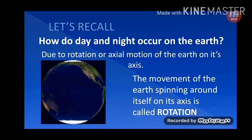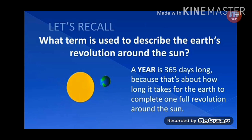Let's recall what you learned in the previous standard. How do day and night occur on the earth? Due to rotation or axial motion of the earth on its axis — the movement of the earth spinning around itself is called rotation. What term is used to describe the earth's revolution around the sun? A year is 365 days long because that's about how long it takes for the earth to complete one full revolution around the sun.